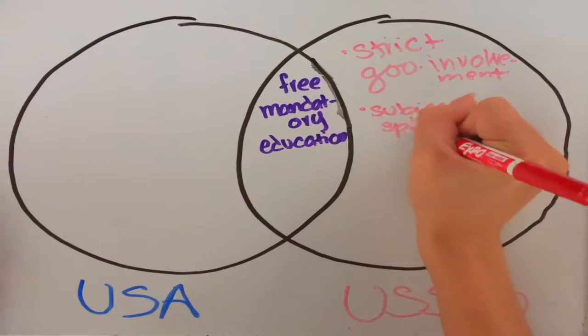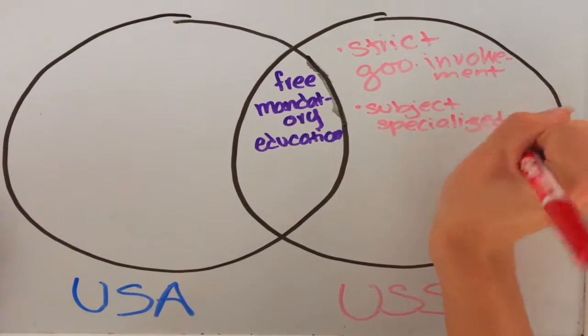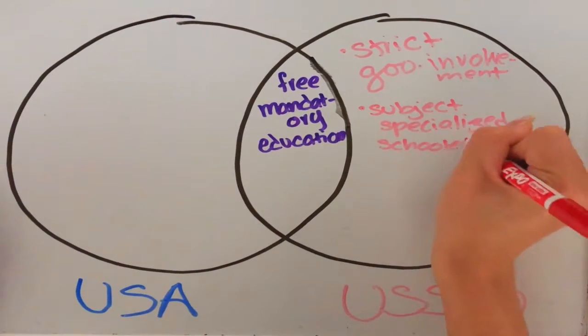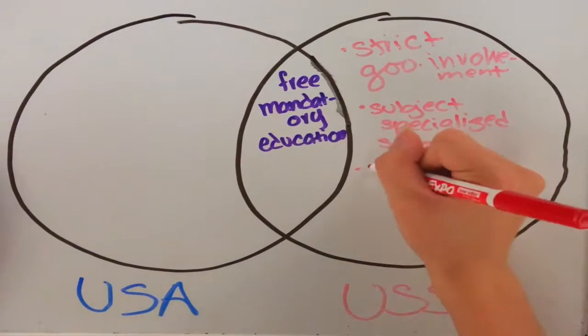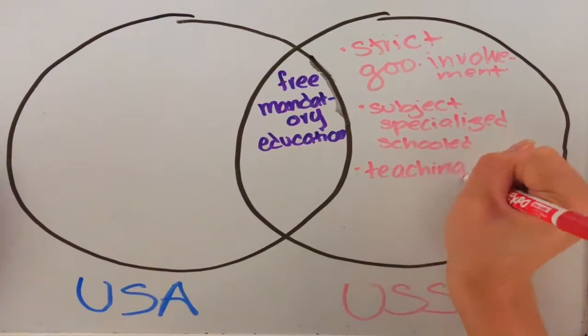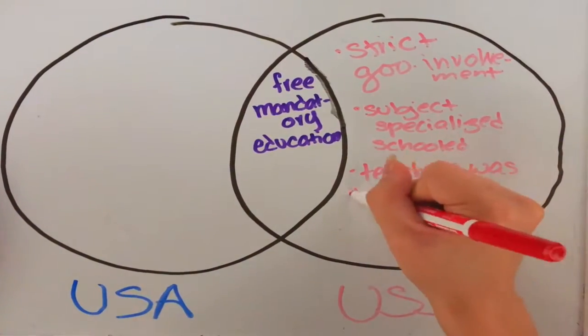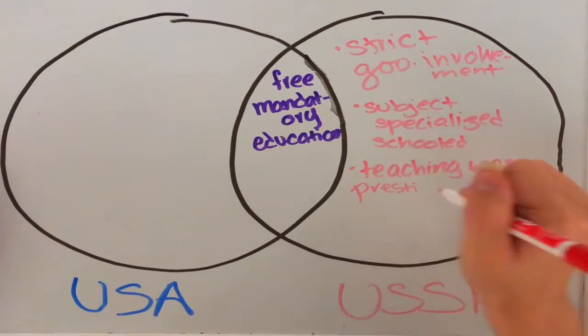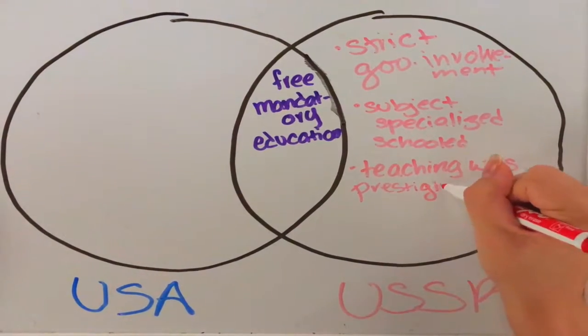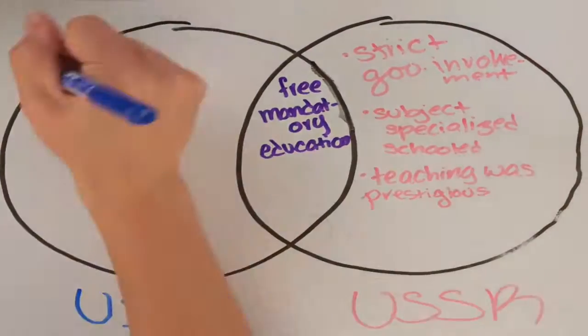Education in the USSR was centralized through strict government involvement in the classroom setting. Classes were made to prepare the student for vocational, technical, or professional line of work, but also to develop Soviet social-political rightness, according to Harvey R. John. They provided daycare opportunities, subject-specialized secondary schools, and teaching was viewed as a prestigious career.